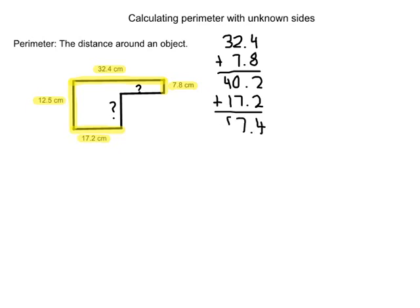And then we're going to have the last side, which is 12.5 centimeters. Add it all up and we are given 69.9 centimeters. Now, we still need to figure out the other two sides.